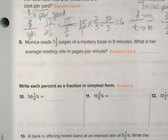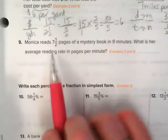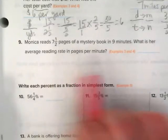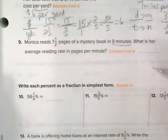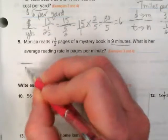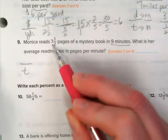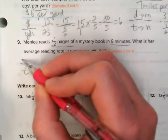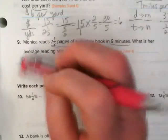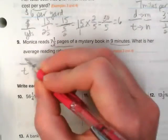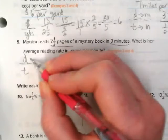Last word problem from yesterday's review: Monica reads seven and a half pages of a mystery book in nine minutes. I see minutes here, so I'm thinking time, and really the distance is the pages in her book, how far she got. So this is going to be our distance, and in this case the distance is pages.